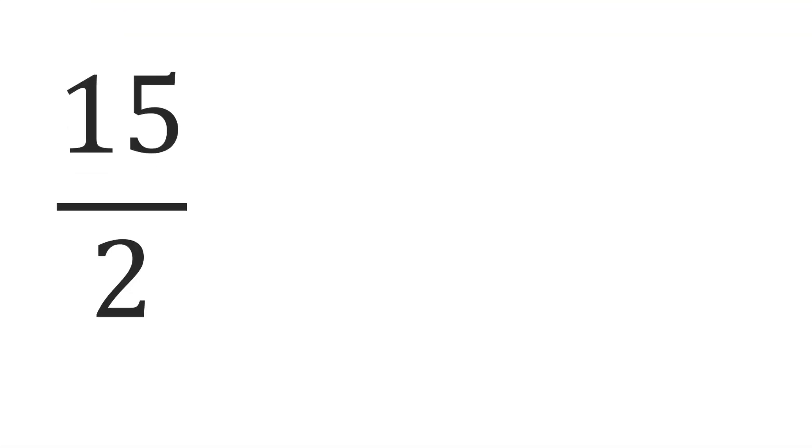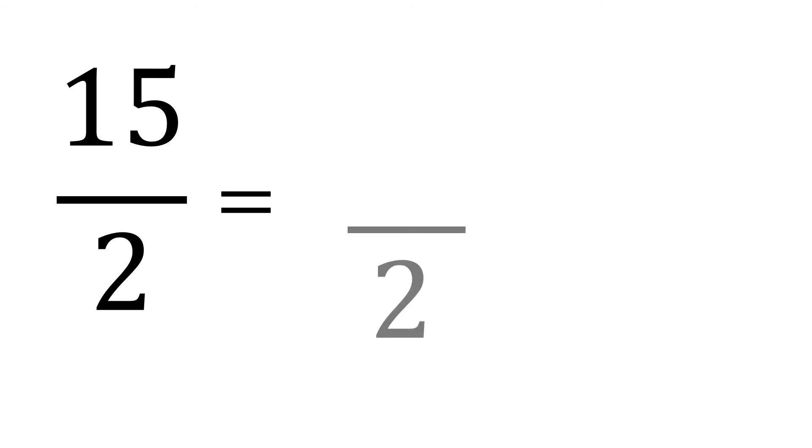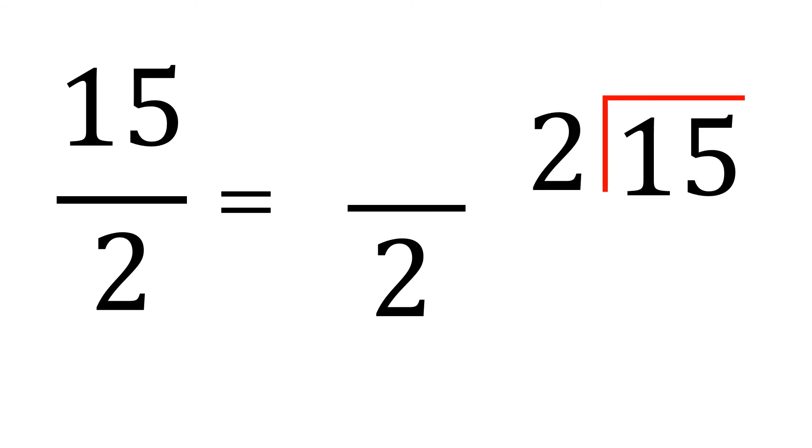How about this? 15 halves. So this is equal to, copy the denominator 2, and then divide 15 by 2. So this will be 7, because 7 times 2 is 14, and that's the closest to 15. Then, subtract 15 minus 14 is 1. So the remainder is 1, and the quotient is 7. So the remainder will be your numerator, and the quotient will be your whole number. So that means 15 halves is equal to 7 and 1 half.